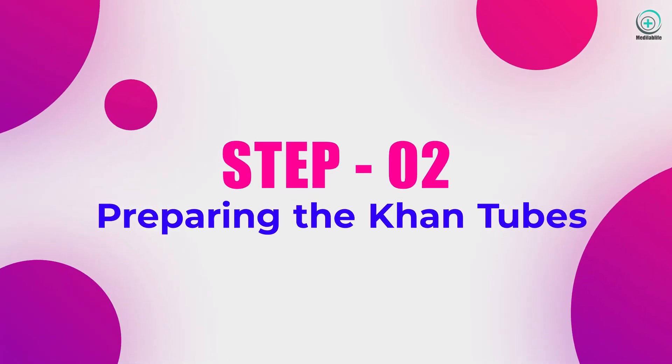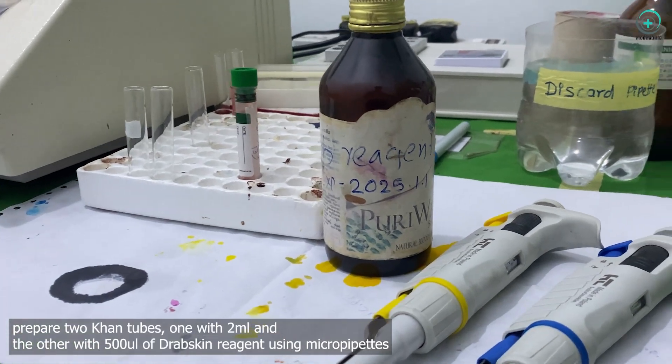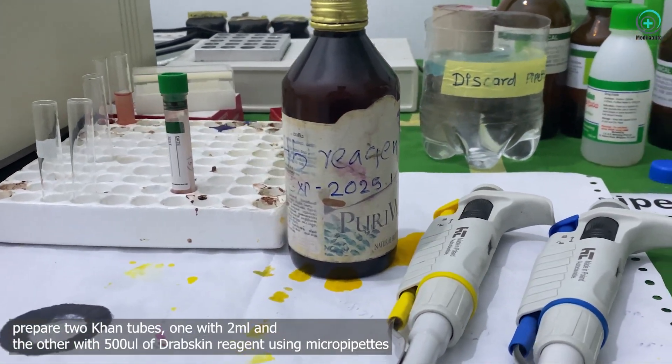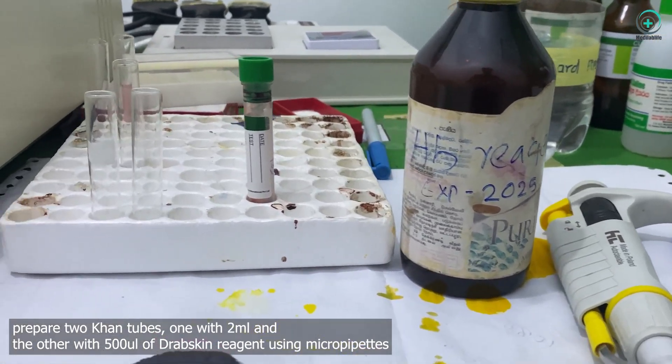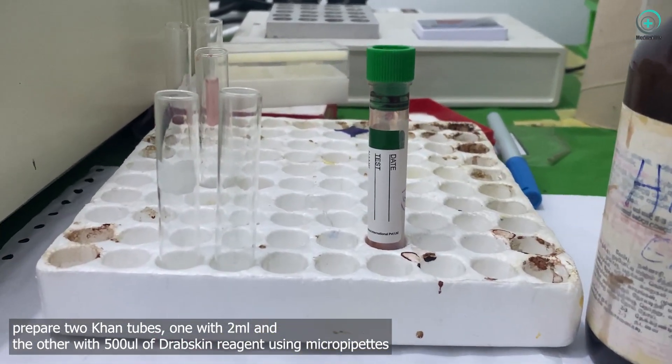Step 2: Preparing the con tubes. Accurately measure and prepare two con tubes, one with 2 milliliters and the other with 500 microliters of Drabkin's reagent using micropipettes.